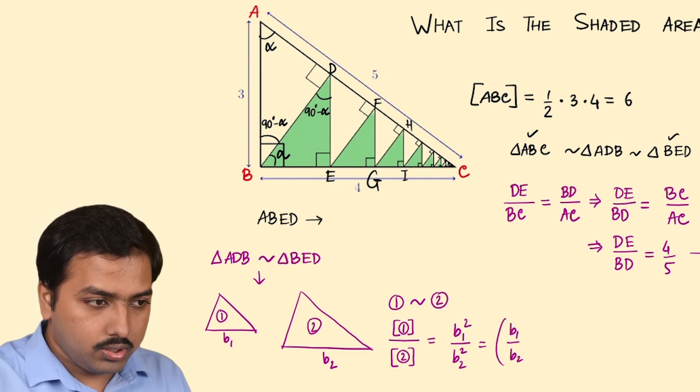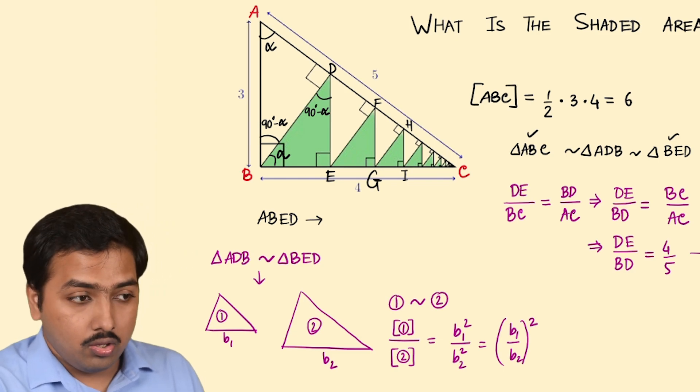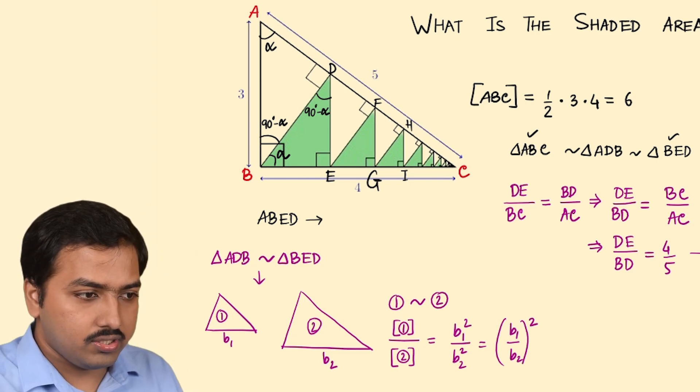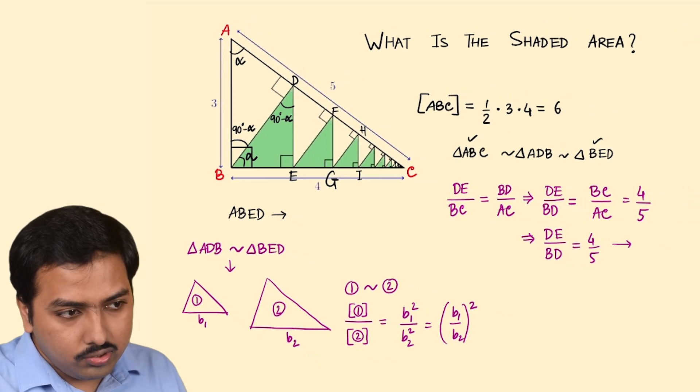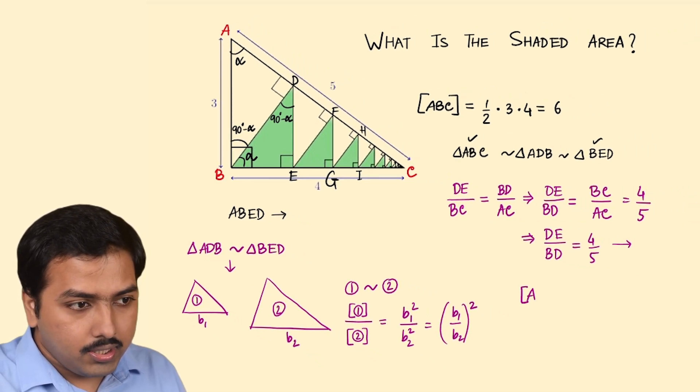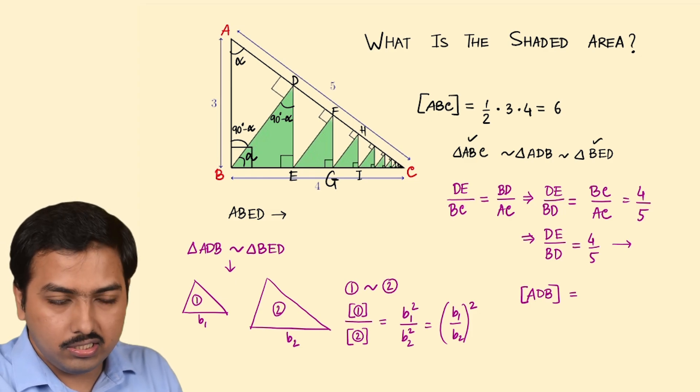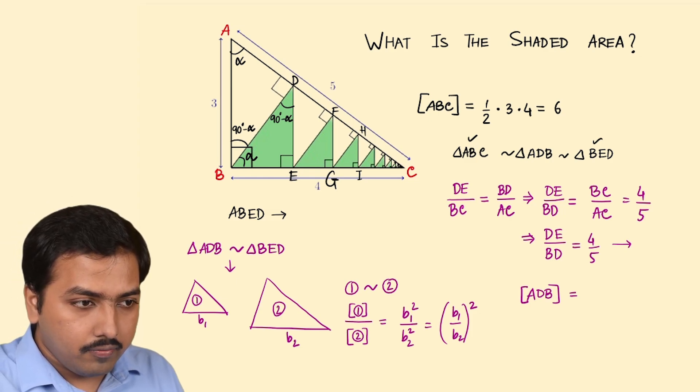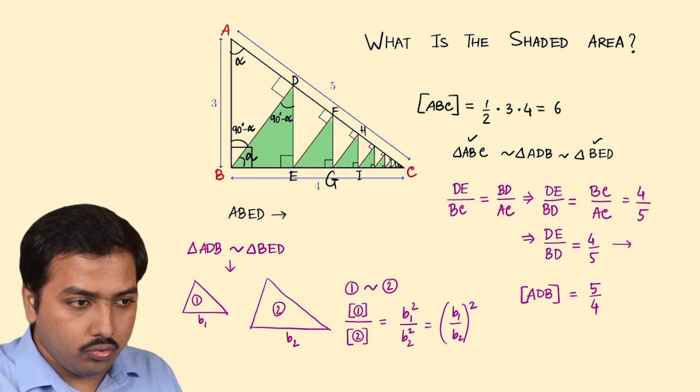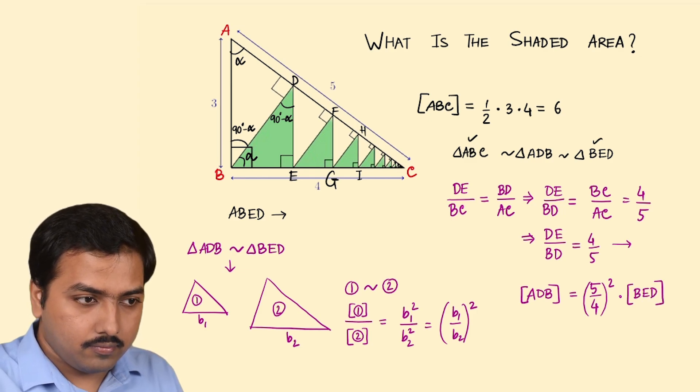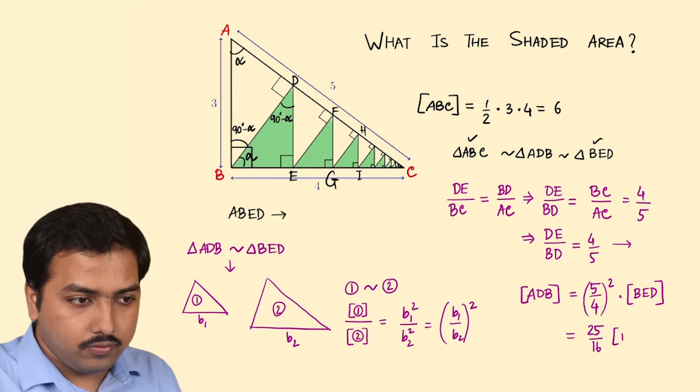So we can use this here. So that leads me to area of ADB would be, okay I'm finding ADB in terms of BED, so that would be 5 upon 4 times area of BED. So that is 25 upon 16 times area of BED.